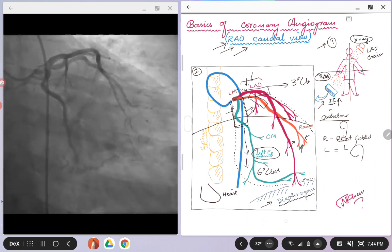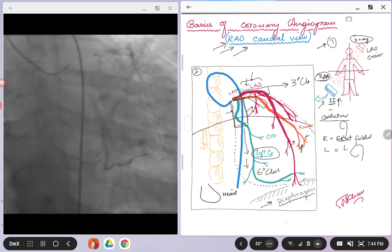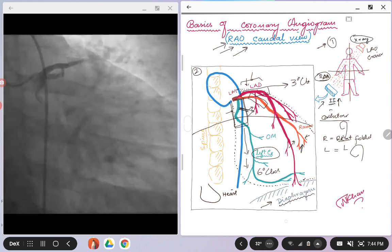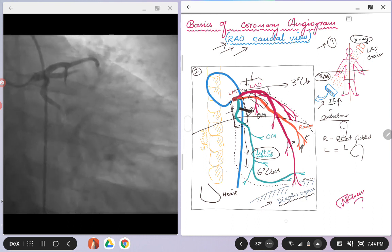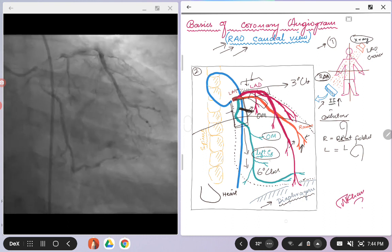In this case, the ramus intermedius is coming right at the fork, so we call it a ramus intermedius. But if it is coming just below that fork, you can call it an OM branch. So here the OM branches will also be laid very nicely.